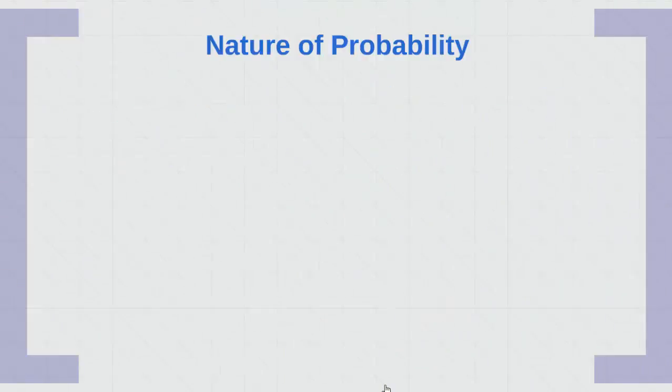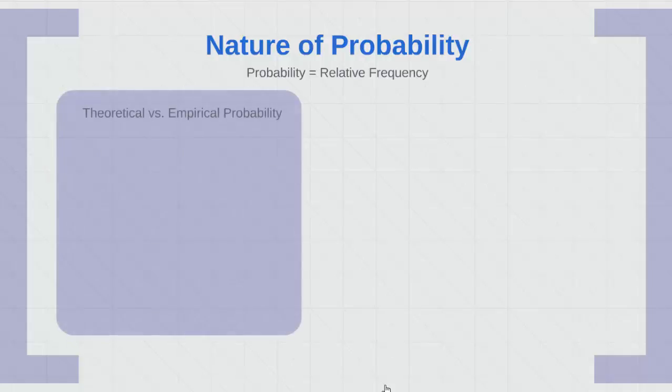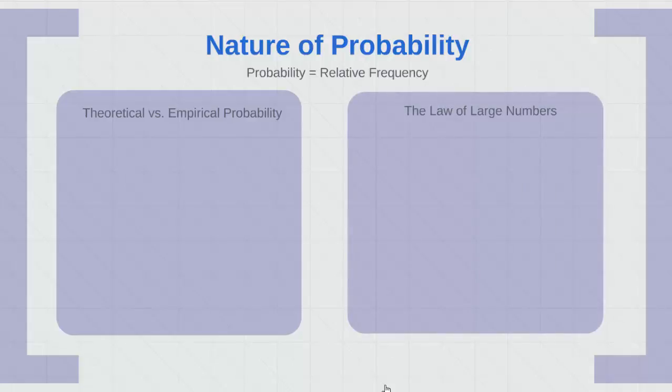Now let's talk about the nature of probability, which is directly related to loss analysis. Probability, remember, equals relative frequency. In other words, the number of times a loss could occur relative to the number of times it could have occurred. Let's look at theoretical versus empirical probability, and then we'll discuss the law of large numbers.